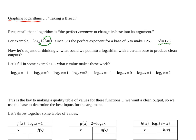Let's adjust our thinking: what could we put into a logarithm with a certain base to produce clean outputs? I've got some examples here. If we have a log with a certain base and we want nice clean outputs, what x-values going into the logarithm would make this pattern fit? I'd challenge you to pause the video and see if you can come up with the answers. For the first one, 5 to the negative first power gives us the x-value, so putting one-fifth in gives a clean output of negative 1.